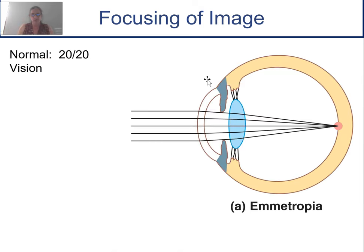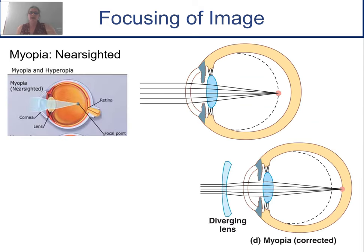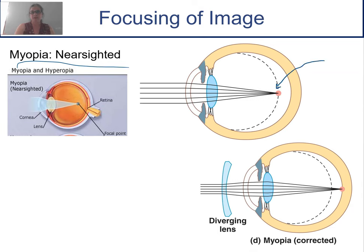Normal vision is called 20/20 vision. As light comes in through the cornea and lens, it gets focused on the fovea, giving us our best vision. When the light doesn't focus where it should, we have conditions like myopia. Myopia means you're nearsighted — you see fine up close, but you can't see things far away. In nearsighted vision, the image focuses in front of the fovea instead of on the retina. We wear lenses to force the light to hit where it's supposed to, correcting the myopia.